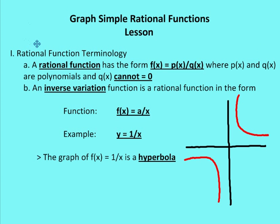Some rational function terminology. A rational function has the form f of x is equal to some function of x over another function of x. So f of x is equal to p of x divided by q of x, where p of x and q of x are polynomials, and q of x cannot be equal to zero. We cannot have a zero as the denominator; otherwise, the value of the function is going to be undefined.